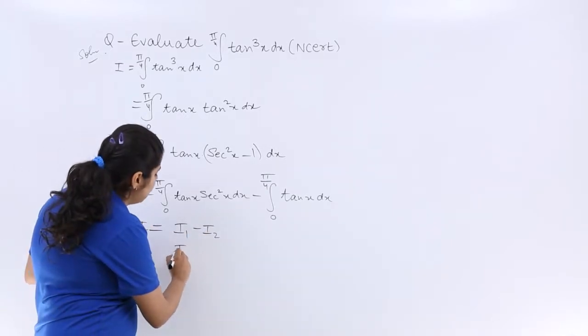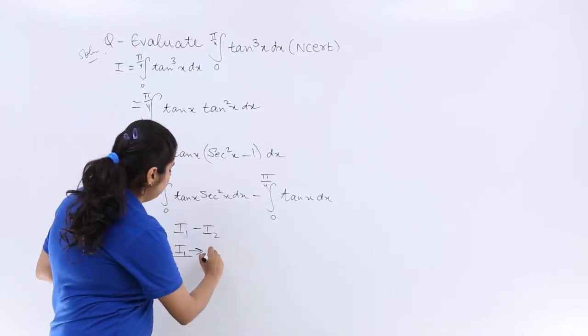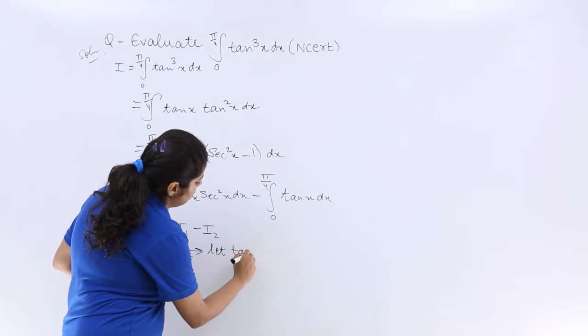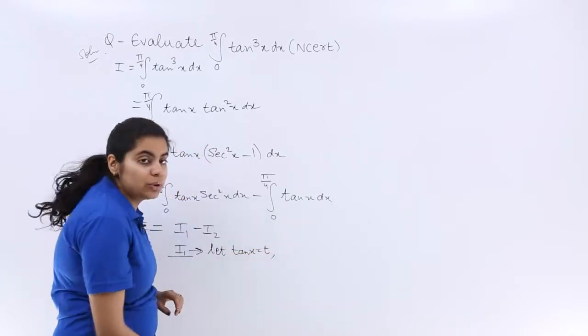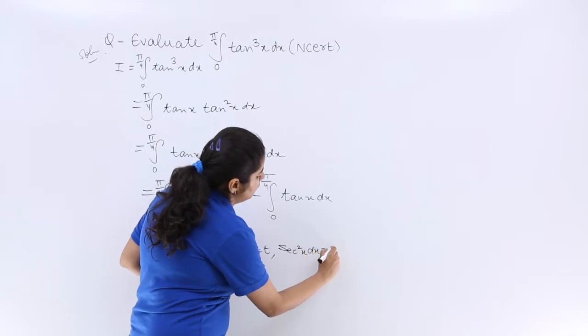For I₁, what I am going to do: let tanx = t. That means sec²x dx = dt. So what is my I₁? My I₁ can be evaluated as ∫t dt.